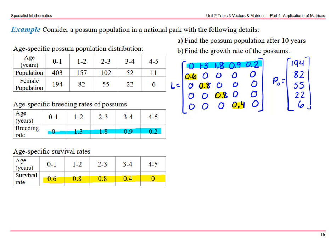So an assumption that males and females are approximately 50% is valid. We want the possum population after 10 years, so P of 10 is going to equal L to the 10th times P of 0. So let's go to our calculators and work that out.